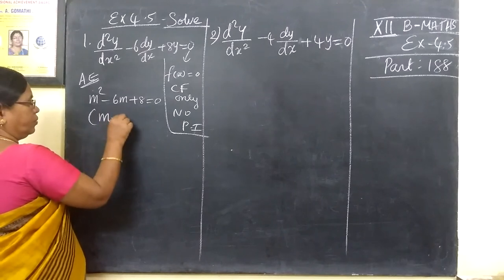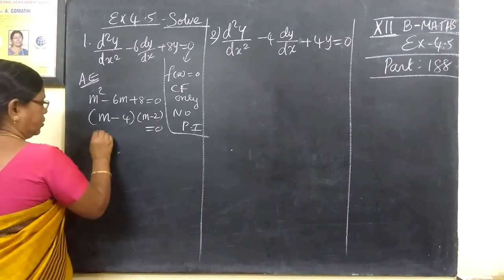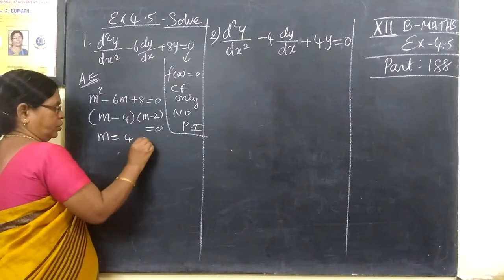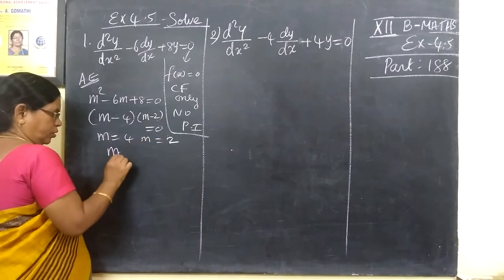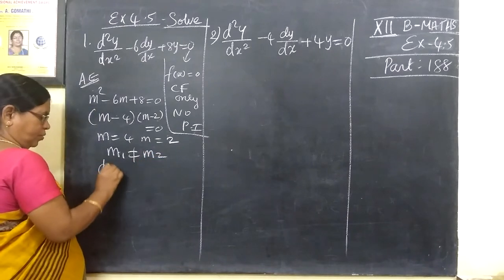So m minus 4 equal to 0, m minus 2 equal to 0. So m equals 4, m equals 2. The roots are distinct, m1 not equal to m2.